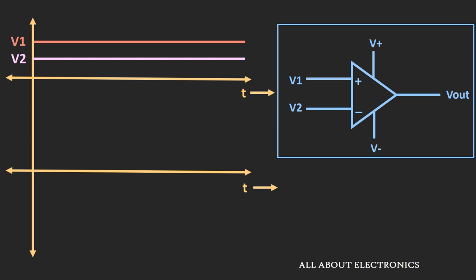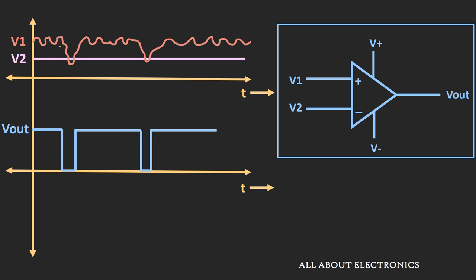Assume that signal V1 is the input signal and signal V2 is the reference signal, and assume that these signals are ideal signals. In that case, as V1 is greater than V2, you should get a constant high output voltage. But if signal V1 is noisy, it is possible that it can affect your output voltage. Because of the noise, this V1 signal crosses signal V2 at two locations, causing transitions in the output voltage.